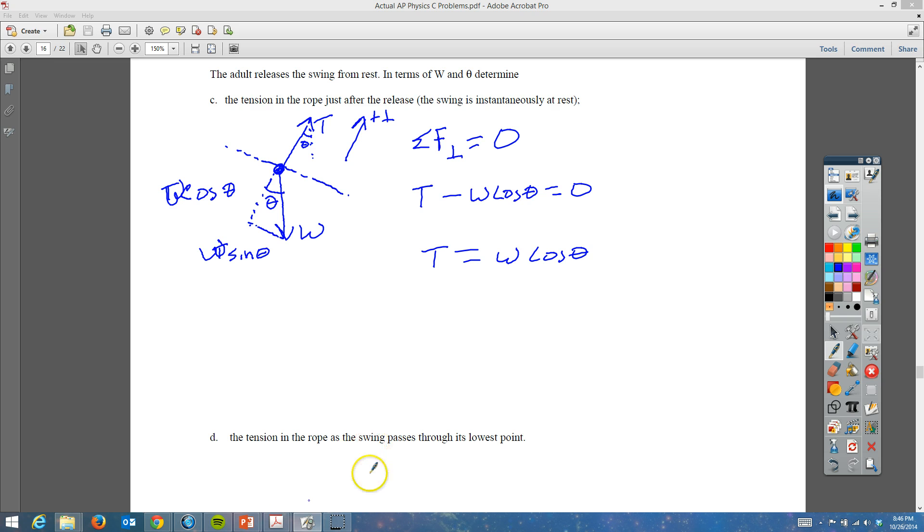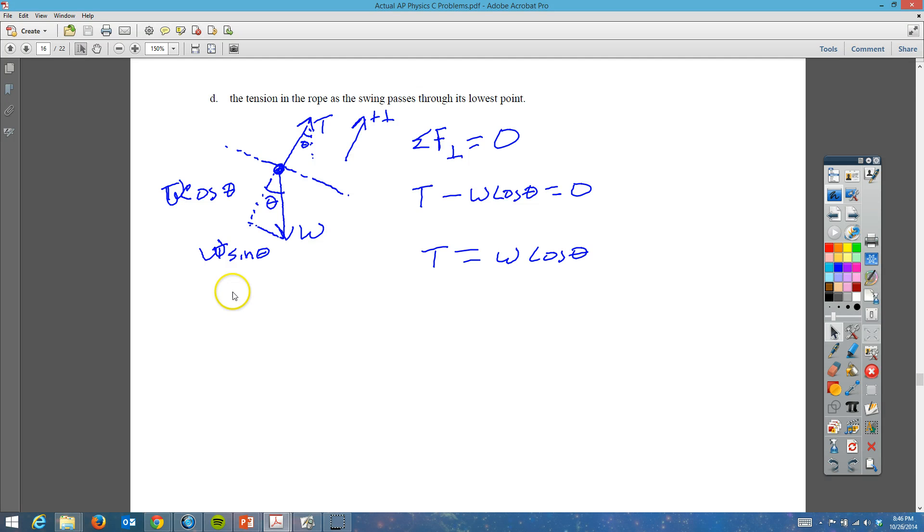The last thing they want us to do is find the tension in the rope as it just swings through the very bottom. So in order to do that, you're going to need to use a little bit of what we remember from before, from last year, which is the centripetal force or a centripetal acceleration, which is V squared all over R. We can only do part of this problem because we're going to have a little trouble. We know that the sum of the forces here should be equal to M times AC, which is the centripetal acceleration.